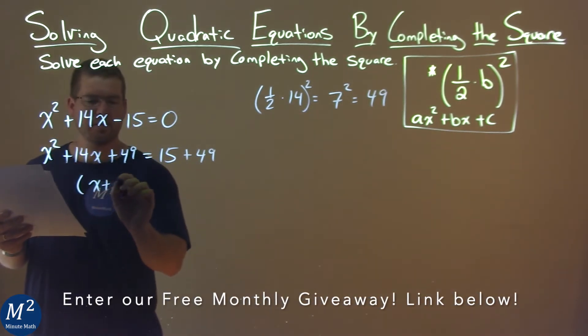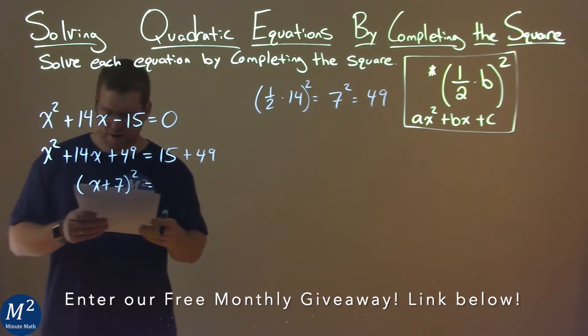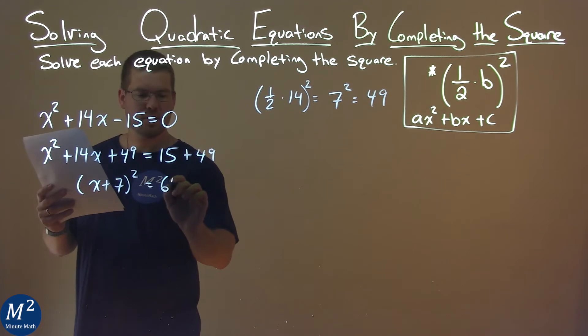It's an x plus a 7, all squared. The right-hand side is, well, 15 plus 49 is a 64.